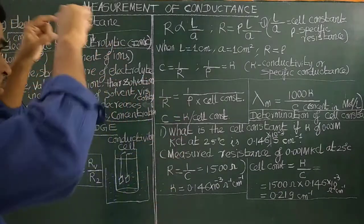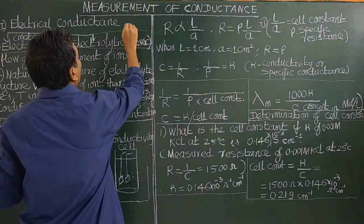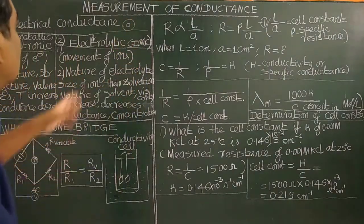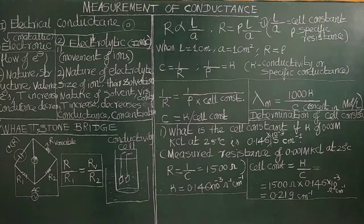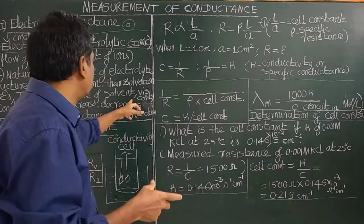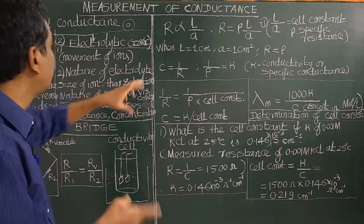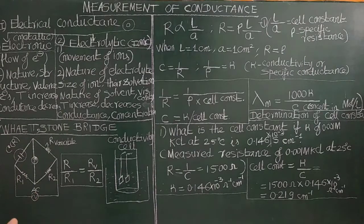Because of the ion size — when the ion is big, it cannot move freely. The nature of the solvent also matters: solvation, hydration, ion-dipole bond. Viscosity is important: when viscosity is high, the movement of ions is less; when viscosity is low, the ions move faster. The conductance depends on the nature of the solvent and its viscosity.